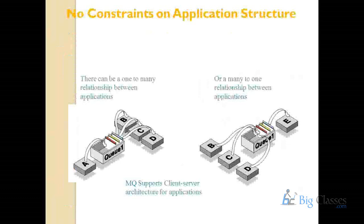IBM MQ supports one-to-one communication. For example, Application A has sent three messages on Q1, and there are three remote services B, C, and D. If remote service B consumes all three messages on Q1, those three messages are no longer available on Q1. Applications C and D cannot get those messages; the queue becomes empty. So communication happens between Application A and B only — that is one-to-one communication.